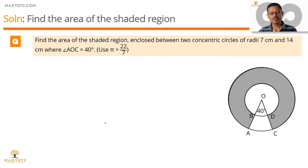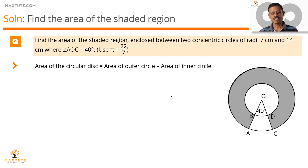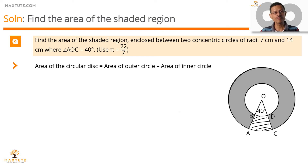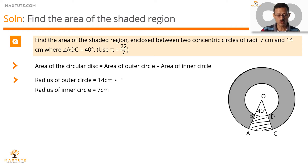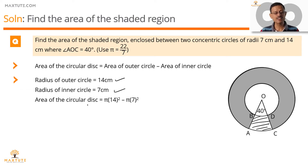If we have to find the area of the full circular disk, including all parts, it would be the area of the outer circle minus the area of the inner circle. Area of the outer circle is pi into the radius of the outer circle squared. Area of the inner circle is pi into radius of the inner circle squared. So the area of the disk would have been pi into 14 squared minus pi into 7 squared.